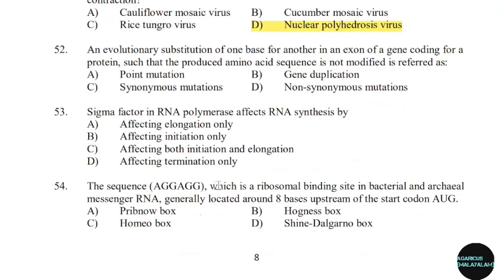52nd question: An evolutionary substitution of one base for another in an exon of a gene coding for a protein such that the produced amino acid sequence is not modified is referred to as. Correct answer: Option C — Synonymous mutation.